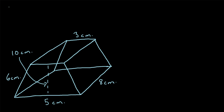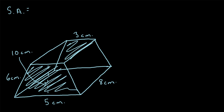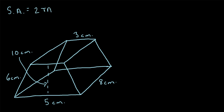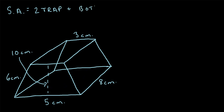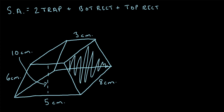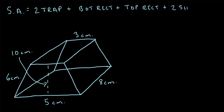There are six total sides. To find the surface area, we can write SA — surface area — is equal to: there's a front trapezoid and a back trapezoid, and these two will be identical. So we have two times the area of the trapezoids, plus the area of the bottom rectangle, plus the area of the top rectangle, plus two times the side rectangles — this side and this side, which will be identical.